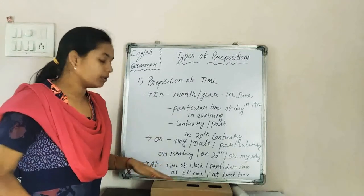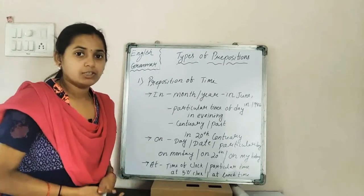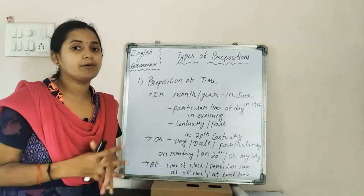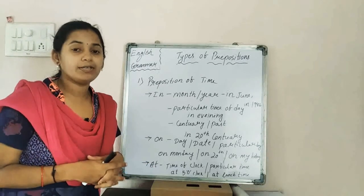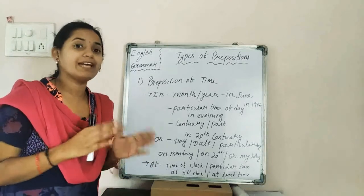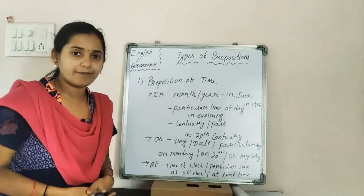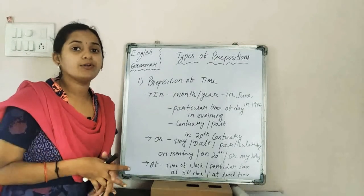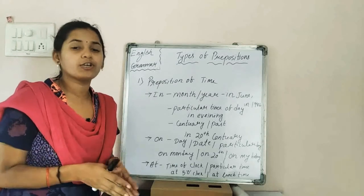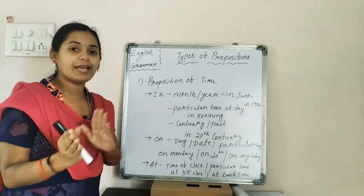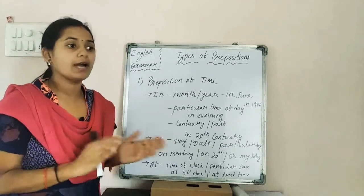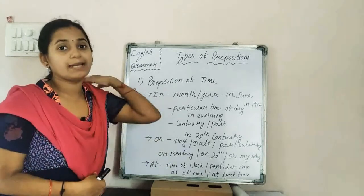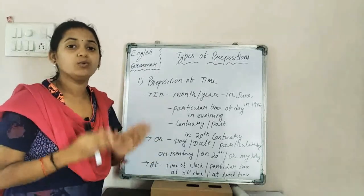Now moving to the third preposition of time, which is 'at.' At is used for a particular time of the clock — for example, at 5 o'clock I will play with my friends. At 6 o'clock my friends are going to come to my house. So for a specific clock time like at 1 p.m., we use 'at.'